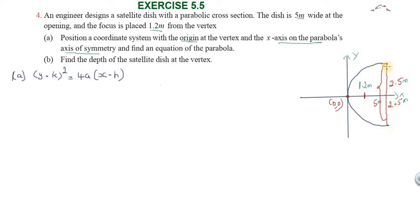This is the vertex. The distance to the focus is 1.2 meters, so the value of a equals 1.2. The origin is at (0, 0), so the center h, k is given as (0, 0). So the values are h = 0, k = 0.